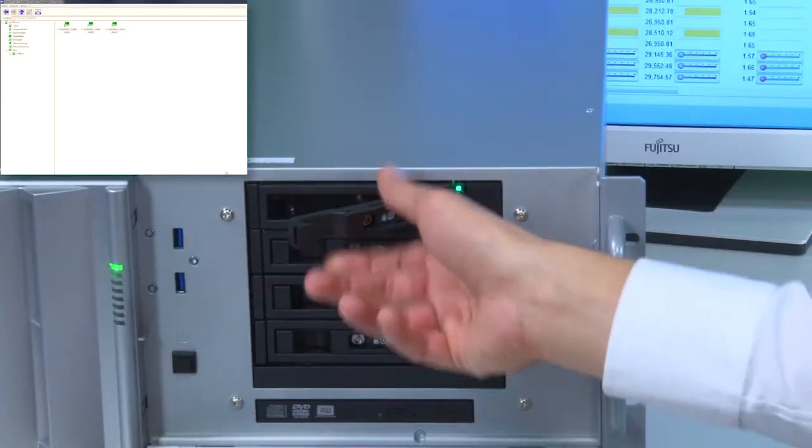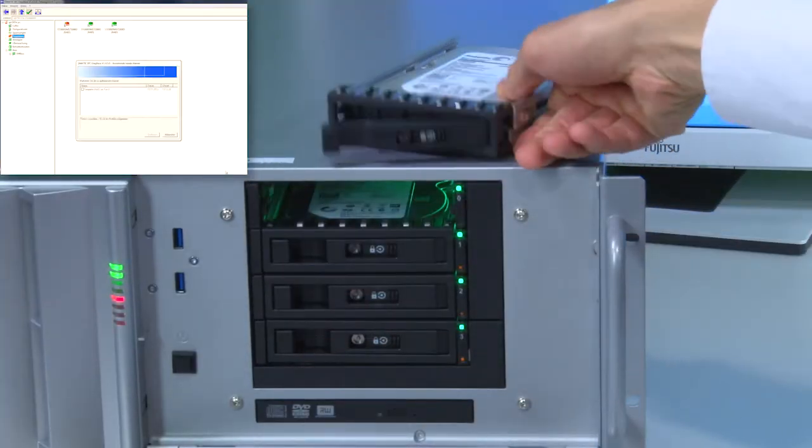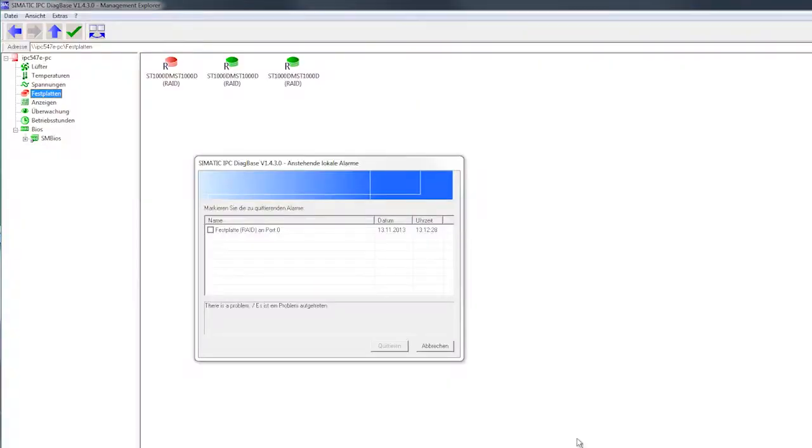Now we simply simulate a RAID drive failure by pulling out a RAID drive. The Diagnosis software shows me via an alert message that a drive has failed. In the DiagBase view as well, the failed drive is initially displayed in red, and through the change in color to orange, it indicates that the automatically launched rebuild process has begun.